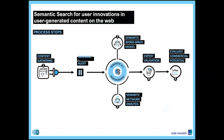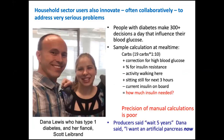We are now developing semantic search methods for user innovations. We can now search the entire web for these kinds of innovations - searching all the user-generated content on the web to find tons of innovations that companies might want to produce, or that users might want to produce just for themselves.